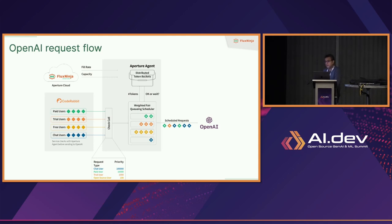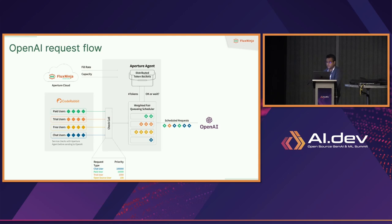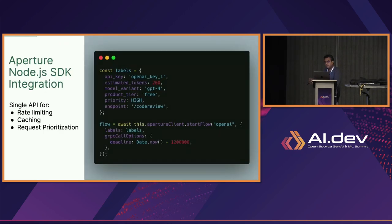During peak load, the idea is that interactive sessions like chat get faster access to OpenAI APIs compared to code reviews, which can wait several minutes to get served. That's the high-level idea of how we worked with this customer. The whole point of the Aperture project is ease of integration — the entire system is based on three steps. Step one: define labels in your code — these are your business attributes, simple key-value pairs.